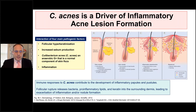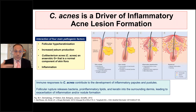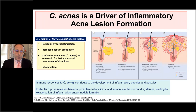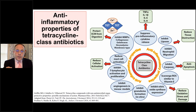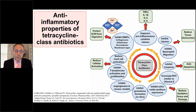Why are we using saracycline against C. acnes? Cutibacterium acnes is an anaerobic gram-positive organism that is a normal component of the skin flora and is thought to be one of the four main pathogenic factors driving acne lesion formation, along with follicular hyperkeratinization, increased sebum production, and inflammation. Immune responses to C. acnes contribute to the development of inflammatory lesions.